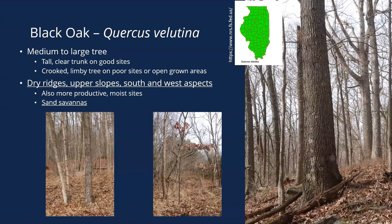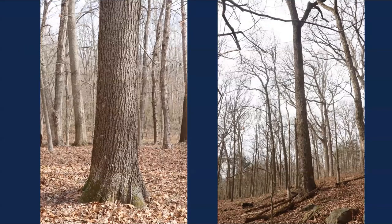Black oak is a medium to large tree with a tall clear trunk on good sites, but it can be crooked and limby on poor sites. It can also grow in sand savannas — there's a whole ecosystem dominated by black oaks in sand savannas, which are pretty neat. Really commonly you find black oaks mixed in with white oaks across almost any forest in the state.